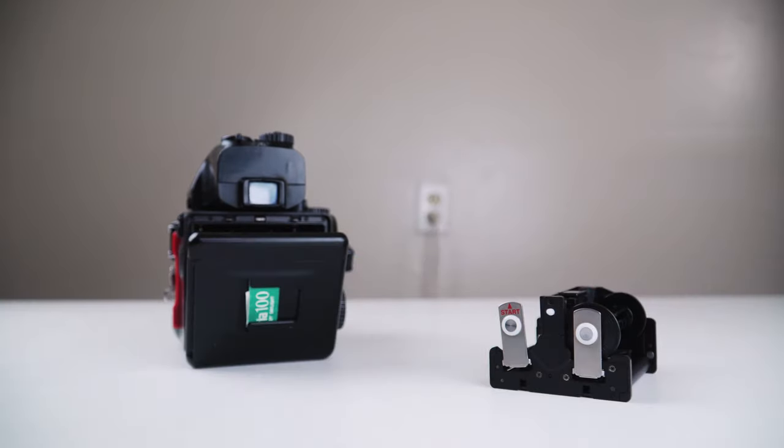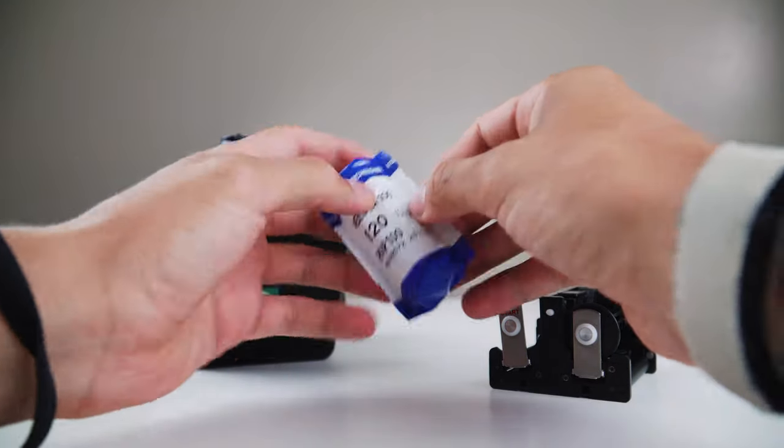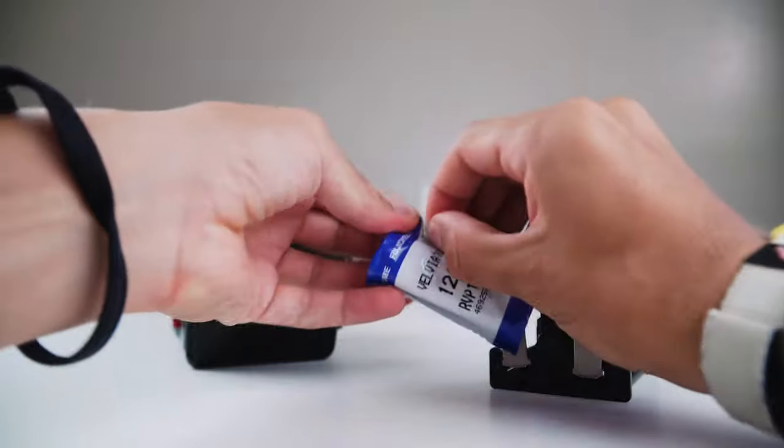The film we're using today is Velvia 100. Fujifilm makes this, but I don't think it's in production anymore. It's E6 slide film, which means it is very expensive to get developed.